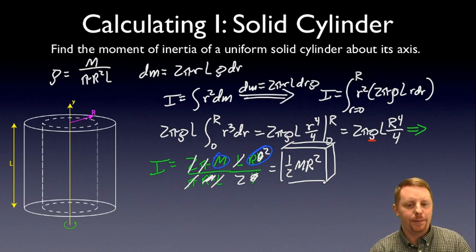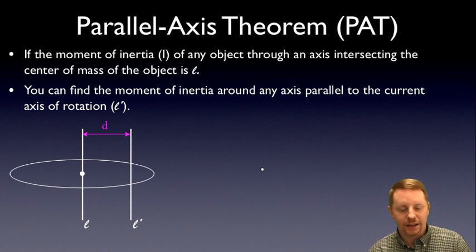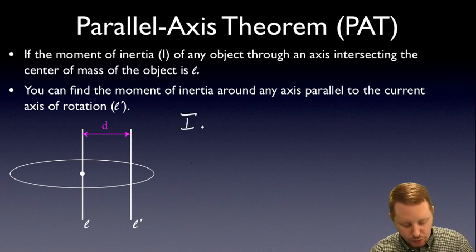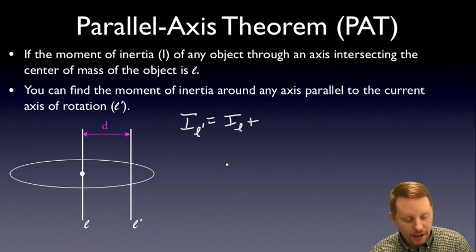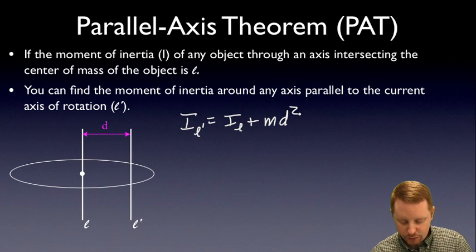These take practice to get down well. Let's look at one more theorem that will really help: the parallel axis theorem. It states that if you know the moment of inertia of any object through an axis intersecting the center of mass, you can find the moment of inertia around any axis parallel to that initial one. If I_L is the moment of inertia through the center of mass, then I through a parallel axis L prime equals I_L plus M times d squared, where d is the distance between the two parallel axes.